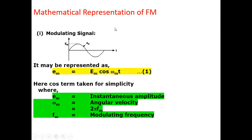Now let us look at the mathematical representation of an FM wave. Assume the modulating signal is a low frequency sinusoidal signal. For convenience, we represent it as em = EM cos(ωm·t), where capital EM is the peak value, small em is the instantaneous value, ωm is the angular frequency, and t is time. Here ωm is calculated by the equation 2π·FM, where FM is the maximum frequency of the modulating signal.